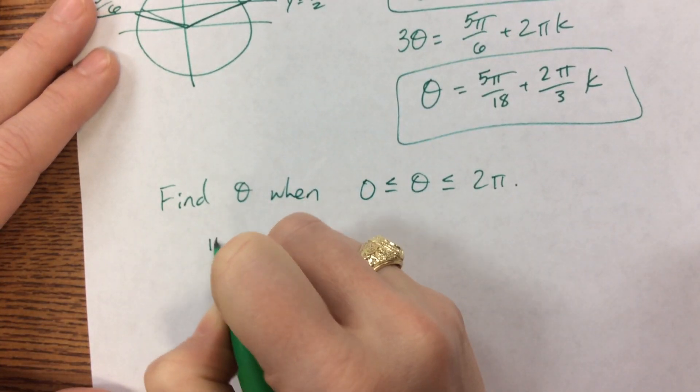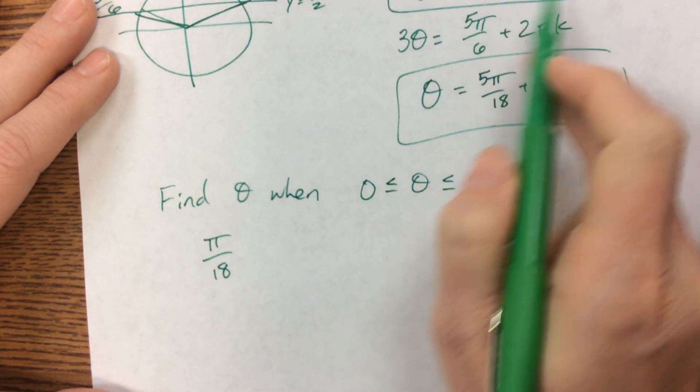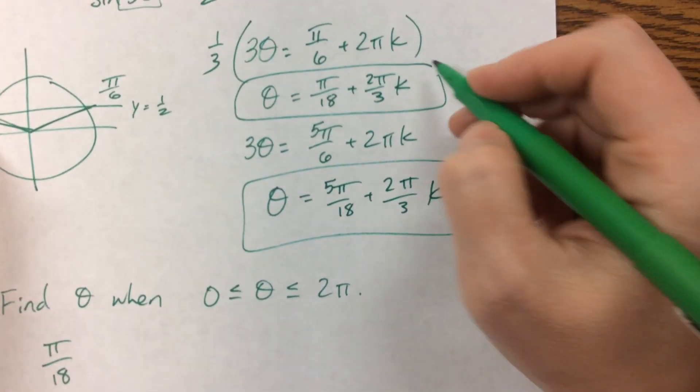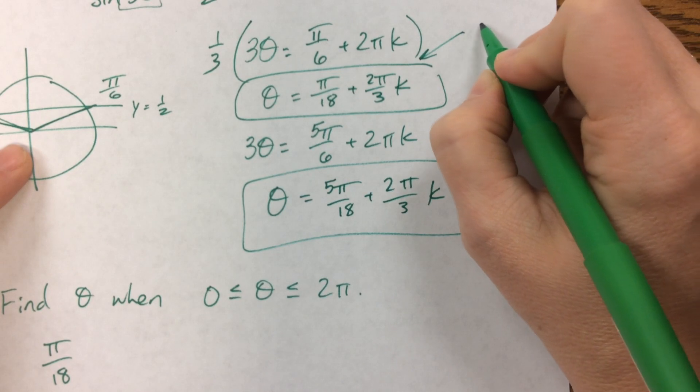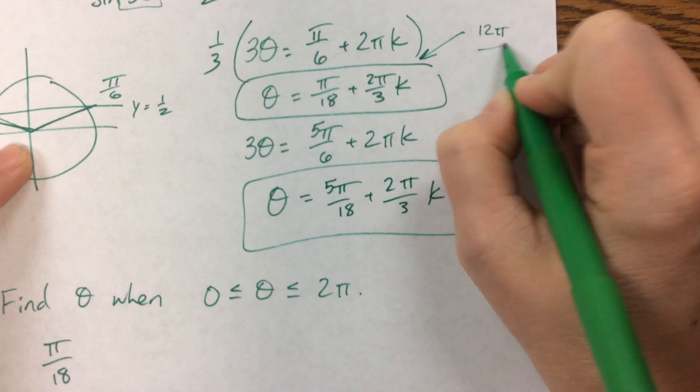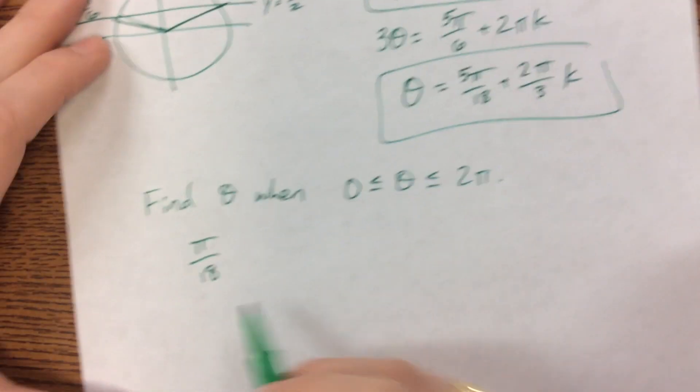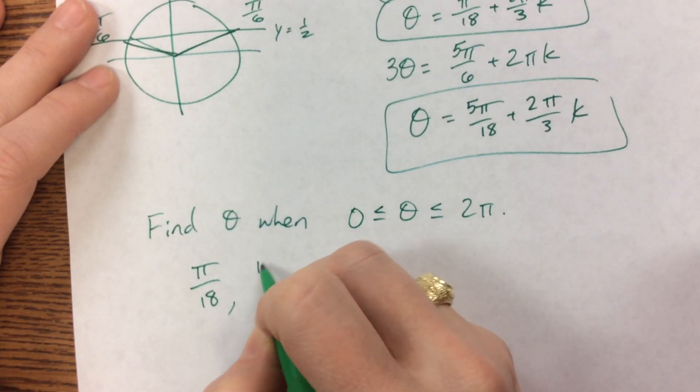The first one is pi over 18, and then this is adding 2 pi over 3 is the same thing as 12 pi over 18, right? 6 goes in there 2, 6 goes in there 3. And so I can add 12 pi.